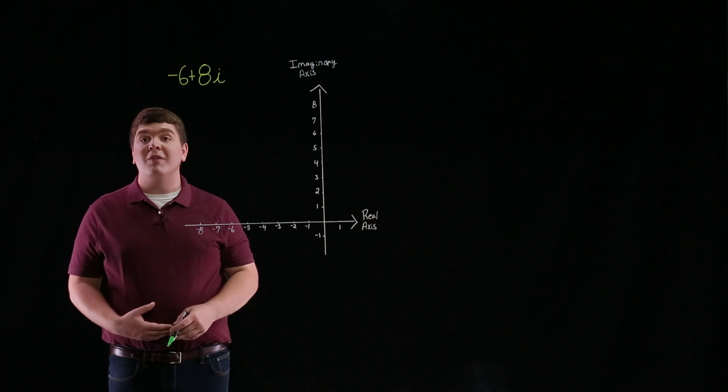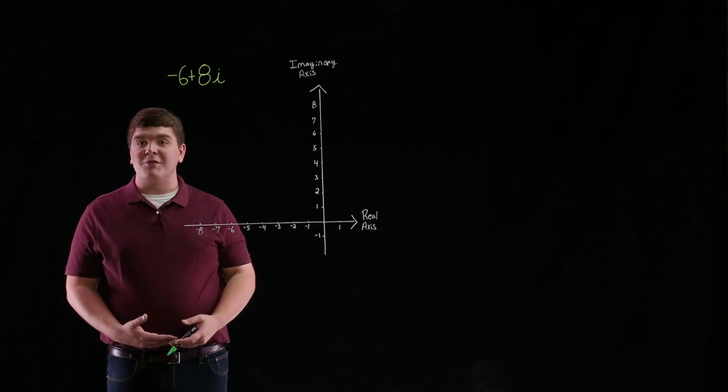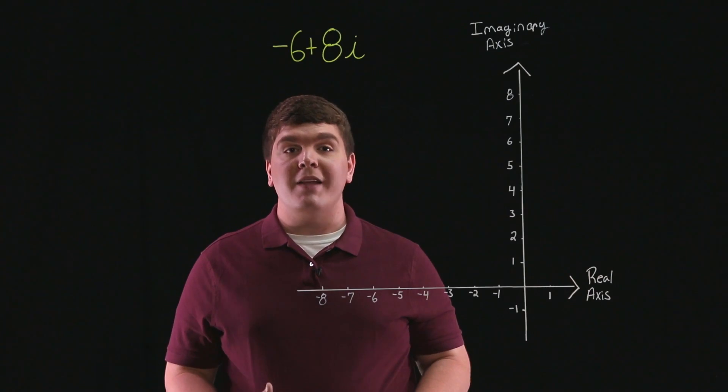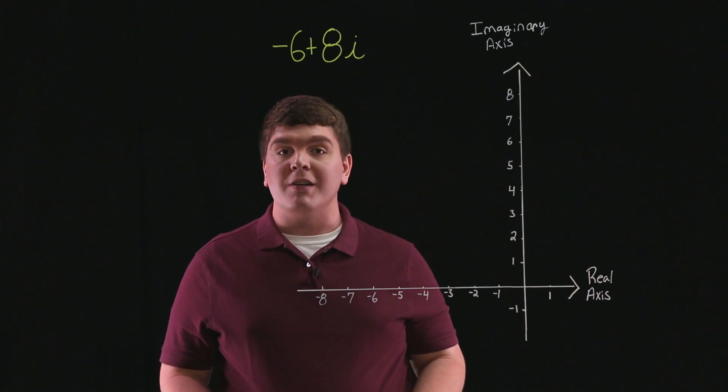we're asked to plot the number negative 6 plus 8i and then find the absolute value of negative 6 plus 8i corresponds to the point negative 6, 8 on the coordinate system.